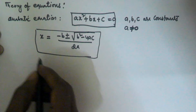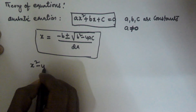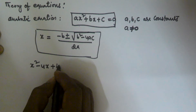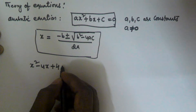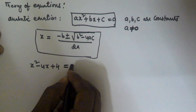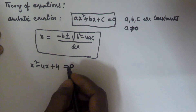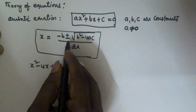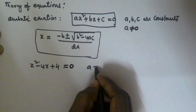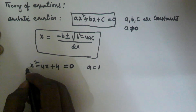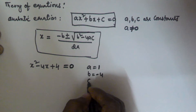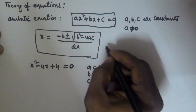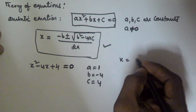Let us consider the equation x² − 4x + 4 = 0. We have to find the roots of this equation using the quadratic formula. Here a = 1, b = −4, and c = 4. We substitute these values into the formula.